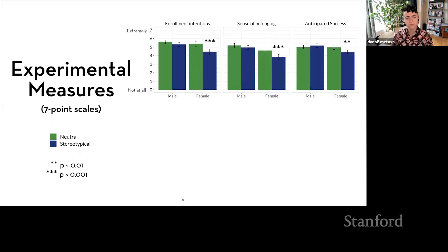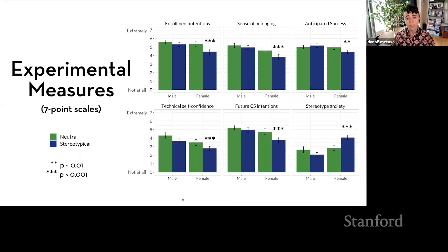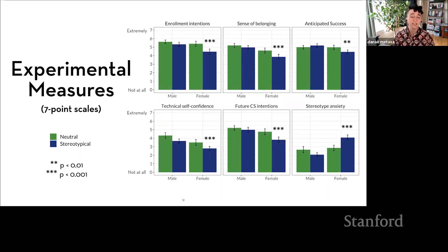What I found was striking. Women exposed to the stereotypical website suffered. For each measure, the bar corresponding to women who saw the stereotypical website is statistically significantly lower than all the others — lower intention to enroll, less sense of belonging, less anticipated success. Moreover, women who saw that stereotypical website were also negatively impacted on longer-term measures: less interest in computer science as a field, less confidence in technical abilities, and they expected to be much more stereotyped in the discipline. All of these were moderate to large effect sizes, as large as any in the prior work on ambient belonging and physical spaces.